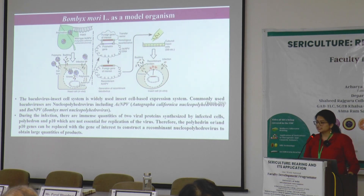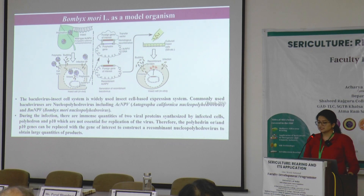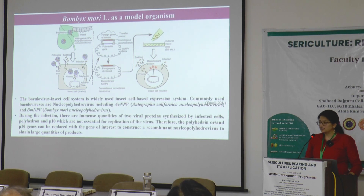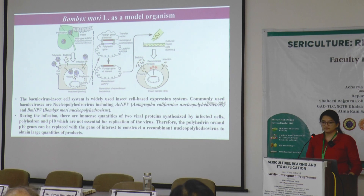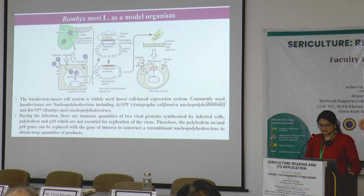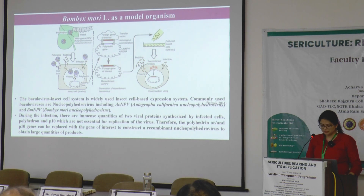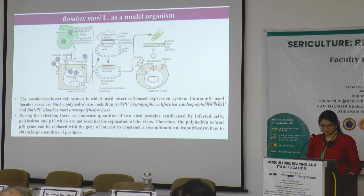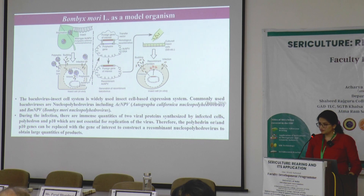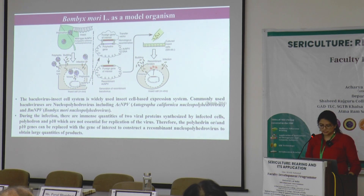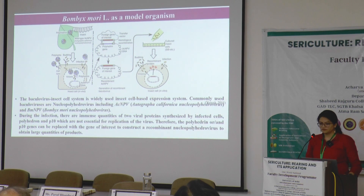Insect cells can also be used as expression systems or bioreactors. The baculovirus insect cell system is a widely used insect cell-based expression system. Baculoviruses are rod-shaped DNA viruses with a large genome; they exclusively infect arthropods and mainly insects. Commonly used baculoviruses are nucleopolyhedroviruses, which include AcNPV and BmNPV, which infects Bombyx mori. During infection, large quantities of two viral proteins — polyhedron and p10 — are synthesized. Since these are not essential for virus replication, the genes encoding them can be replaced with a gene of interest to construct a recombinant nucleopolyhedrovirus and obtain large quantities of a recombinant protein.